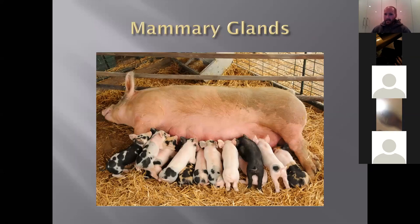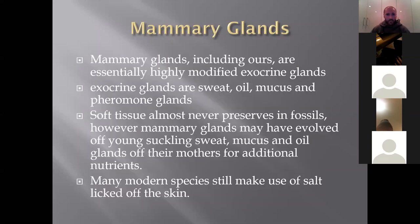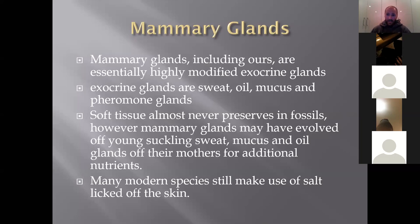Mammary glands are really interesting — if you're a mammal, you have them, including males, though in men they usually don't work. Mammary glands are essentially highly modified exocrine glands. Exocrine glands are unique to mammals — they are sweat, oil, mucus and pheromone glands. Endocrine glands are inside the body pumping hormones. We assume the therapsids and cynodonts had these based on evidence from fossilized skin remains, though soft tissue almost never preserves in fossils.